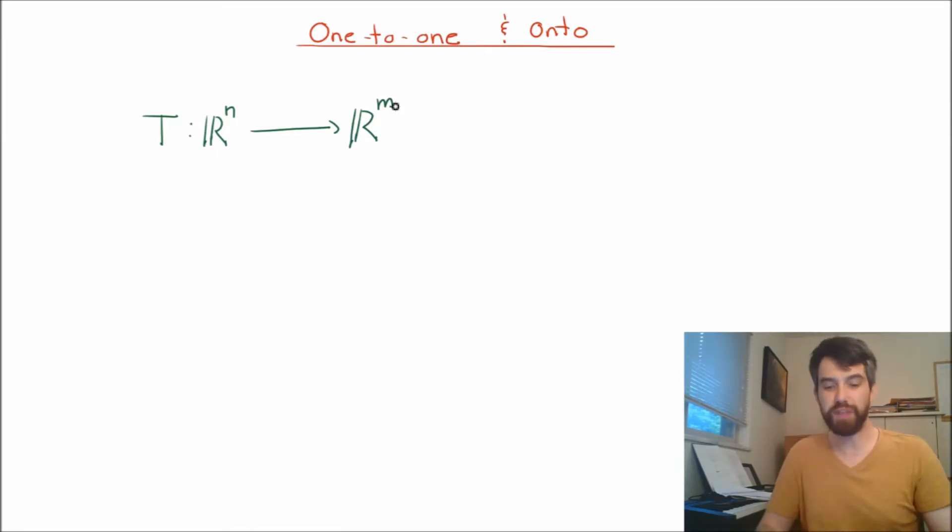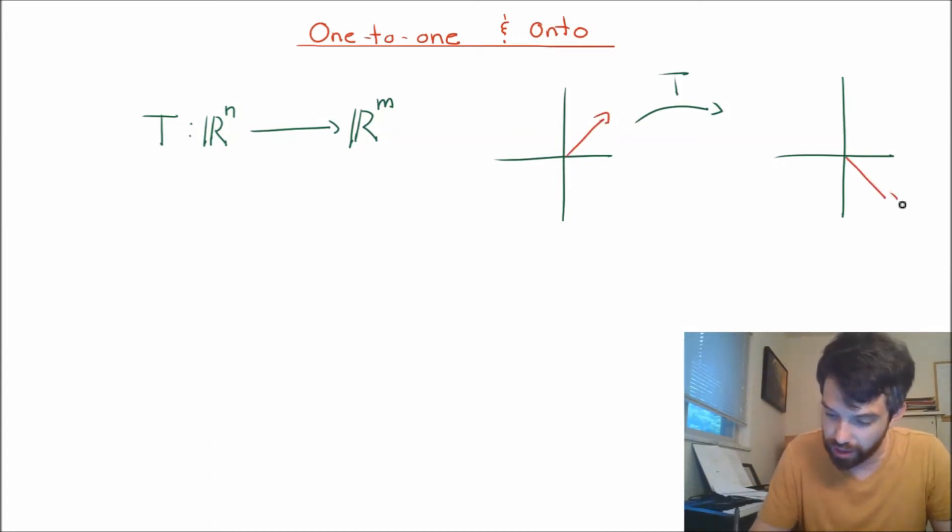You can sometimes visualize it. Let me suppose N and M are both equal to 2. I have some two-dimensional space and then the transformation picks up the vectors and spits them out here. Perhaps this vector here transforms into that vector. If that's x, then this is T(x). I just made up a random transformation.